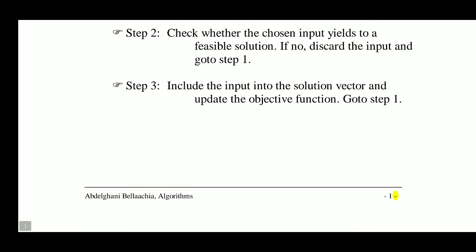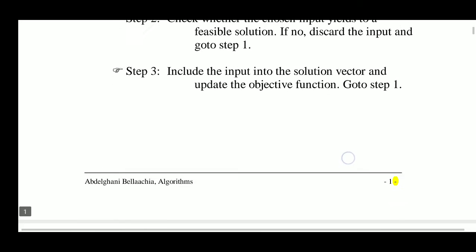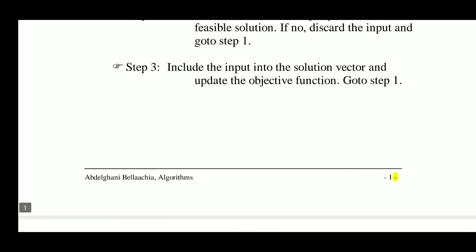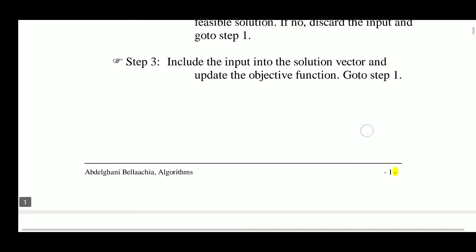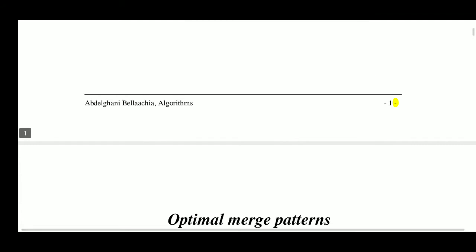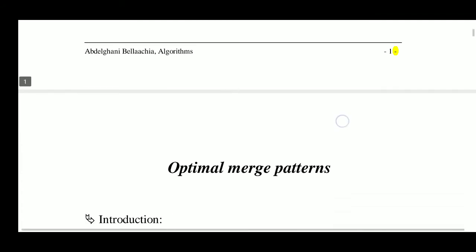If some input does not yield a feasible solution then we should discard it. We always include the input in the solution vector, update the objective function, and then go back to step one.